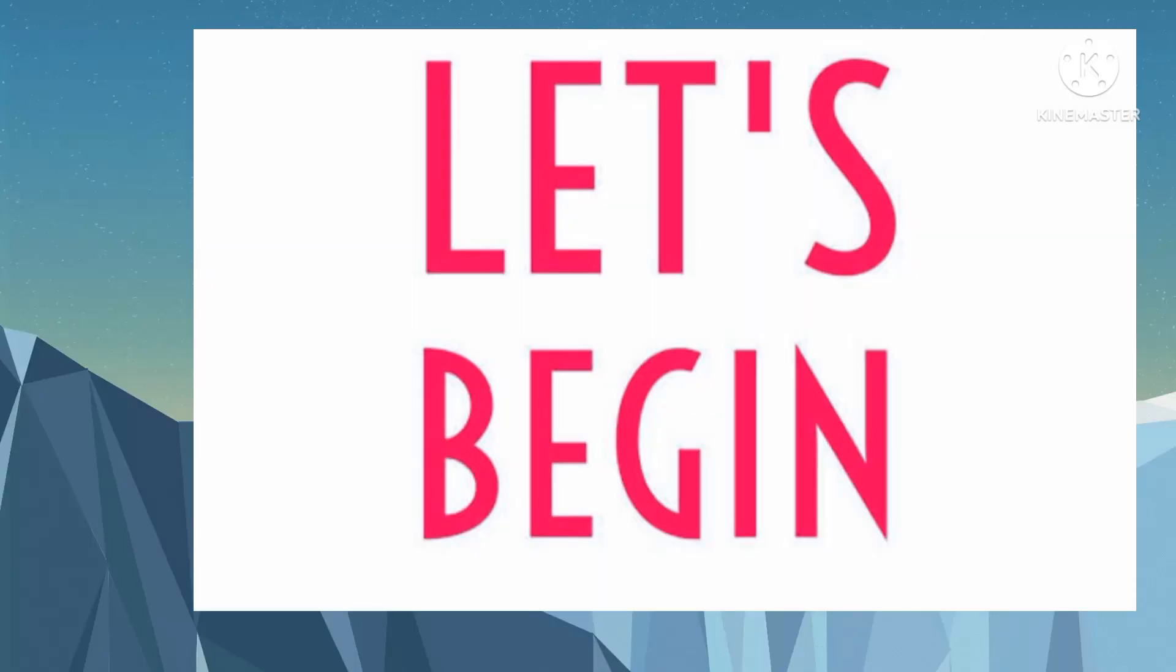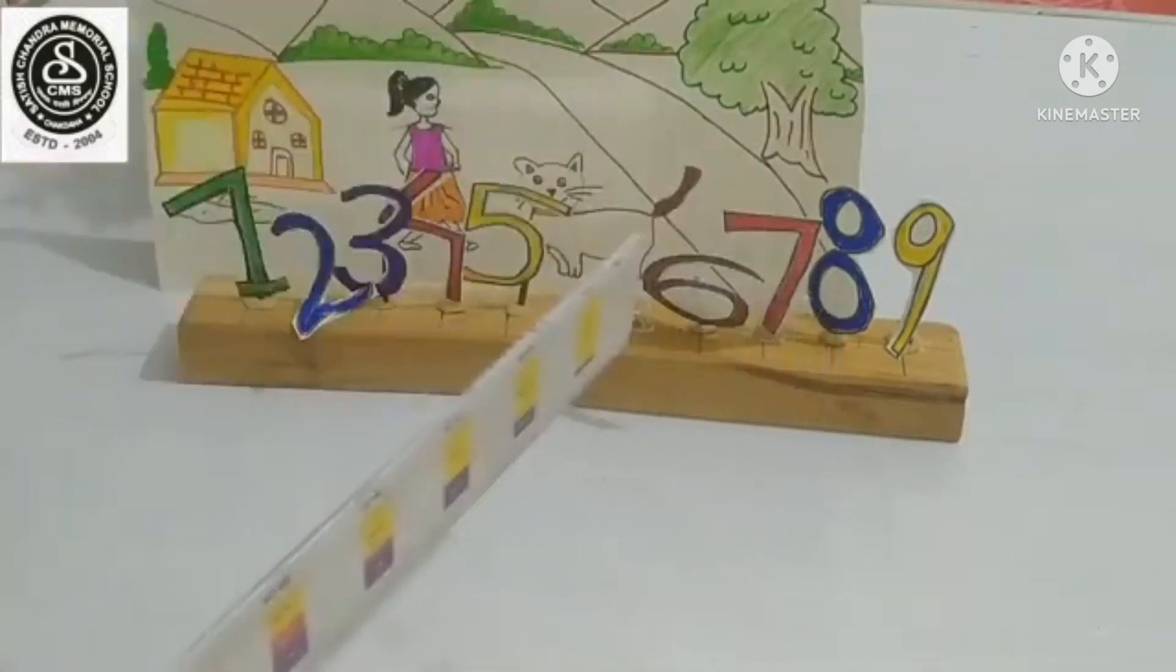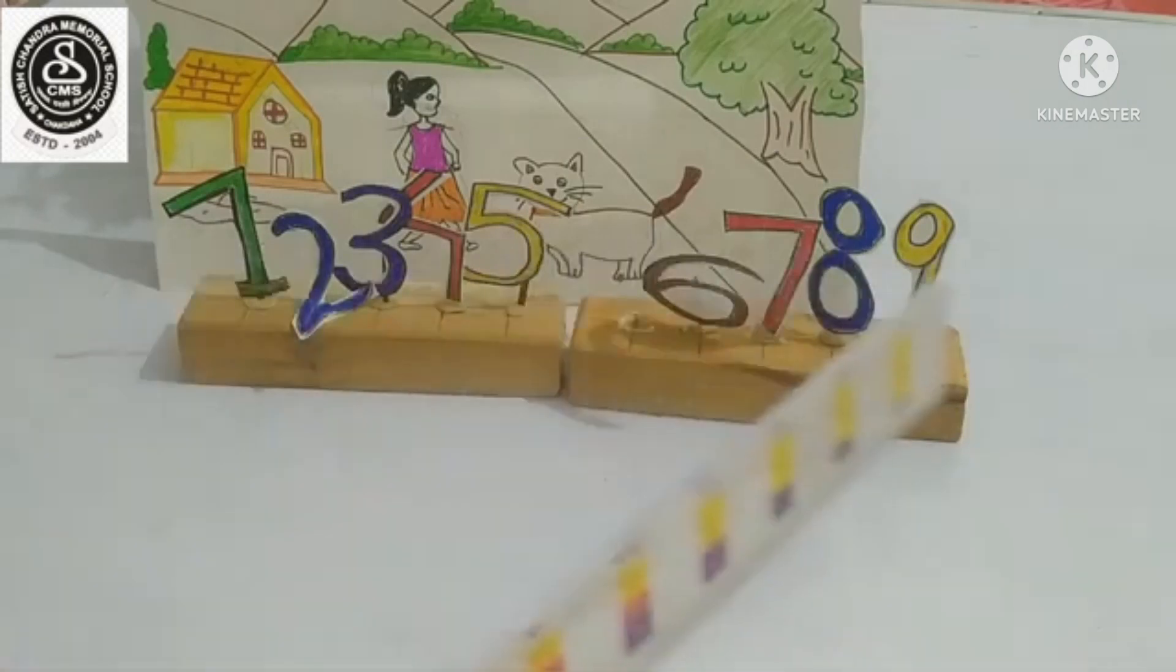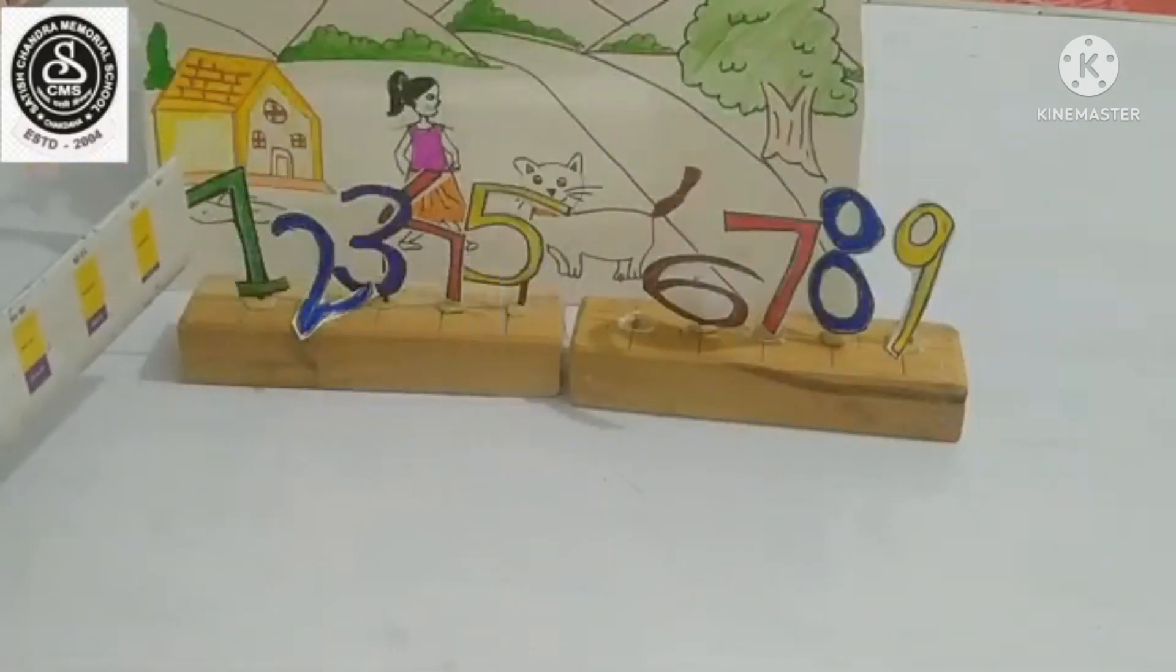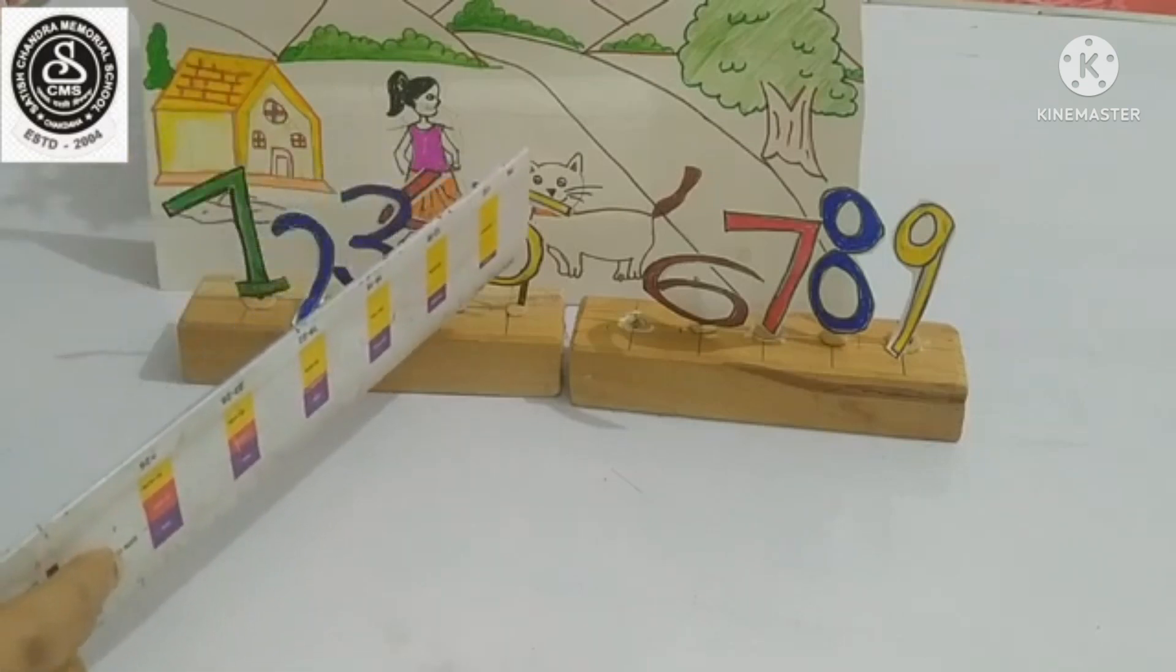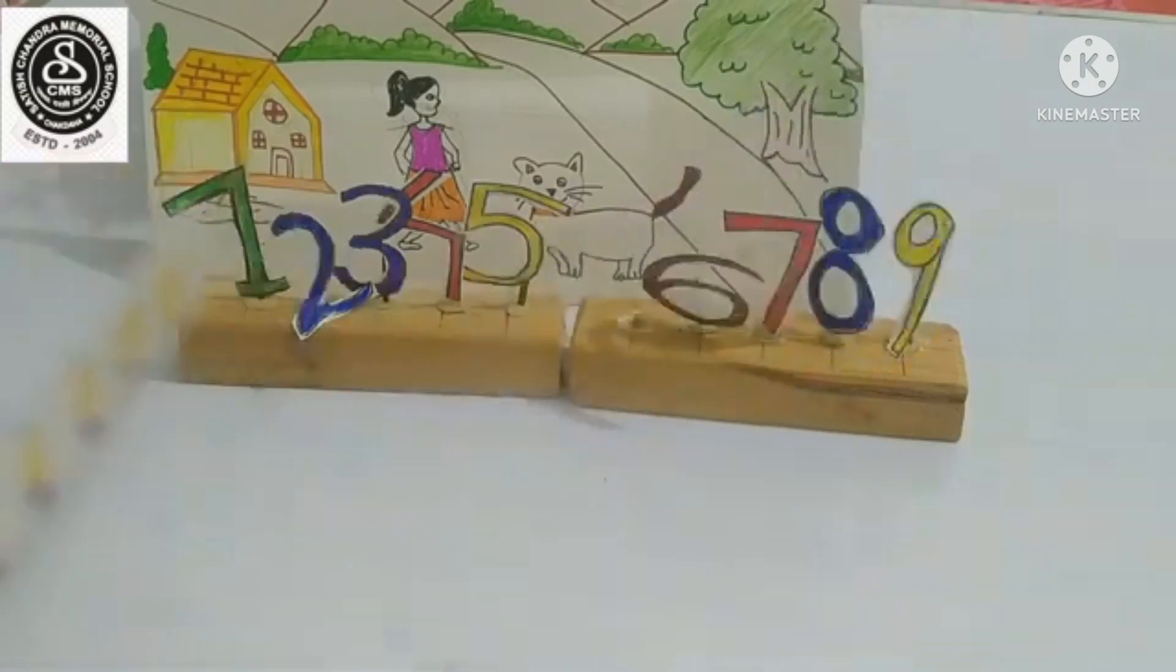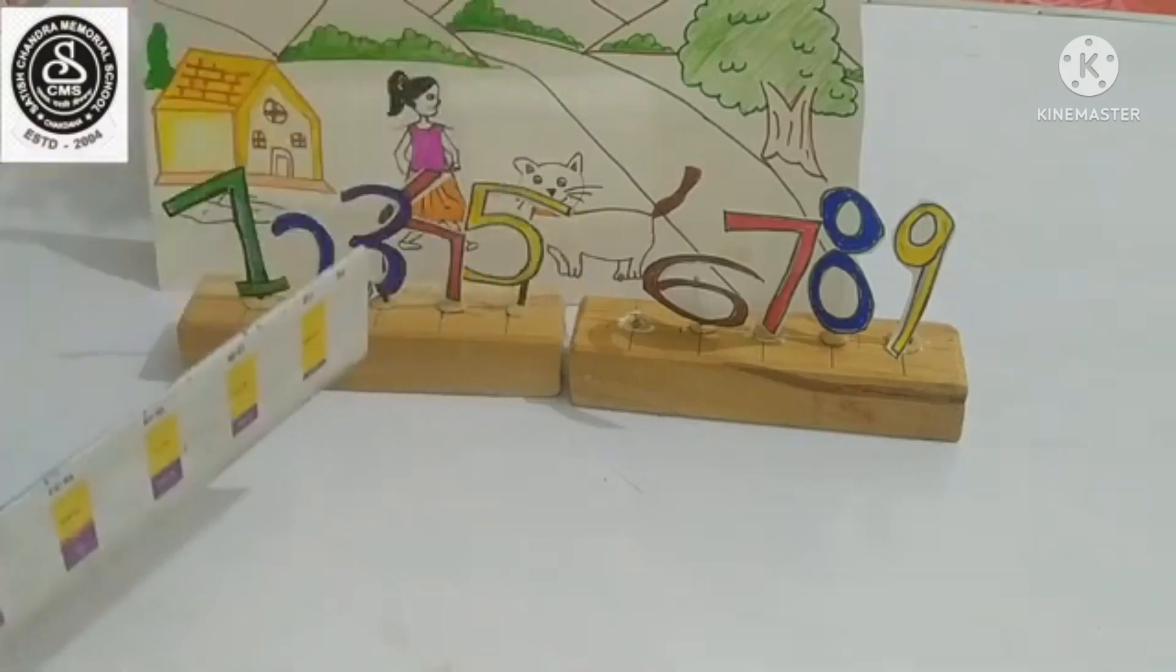So, let's begin. One day, a teacher called a meeting of numbers. Here you can see all the numbers came except zero. So, 1, 2, 3, 4, 5, 6, 7, 8, 9. All the numbers came except zero.